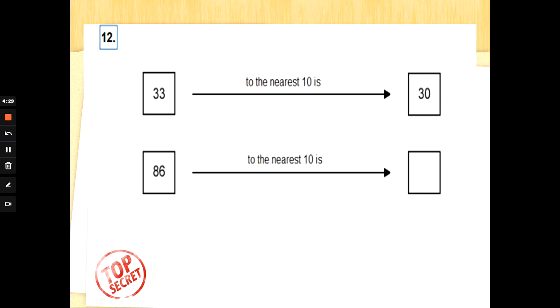Number 12: 33 to the nearest 10 is 30. This is a rounding question. Do you remember: one, two, three, or four round down to the tens you started from. Five, six, seven, eight, or nine round up to the next tens on the number line.